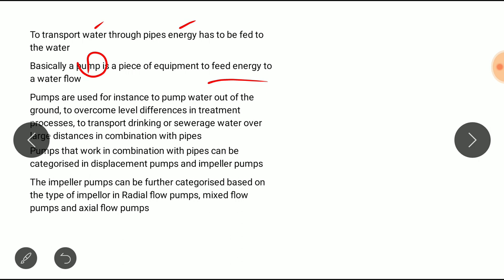Pumps are used, for instance, to pump water out of the ground, to overcome level differences in treatment processes, to transport drinking or sewage water over large distances in combination with pipes. So when we talk about the pump, there are two main types.